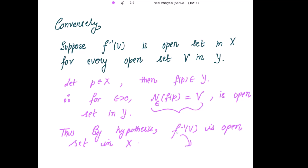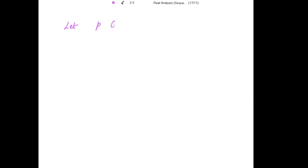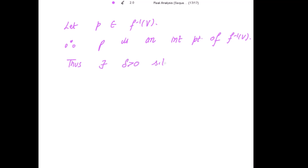Let p belong to f inverse V. Because f inverse V is an open set, p is an interior point of f inverse V. Because p is an interior point of f inverse V, there exists delta positive such that the neighborhood of p with delta radius is a subset of f inverse V. For the Y metric space we take epsilon, and for the X metric space we take delta — please remember this.